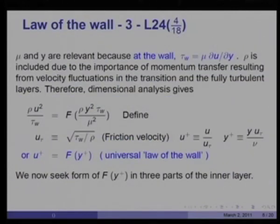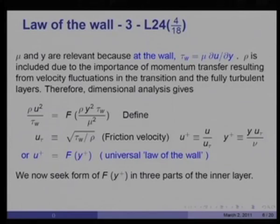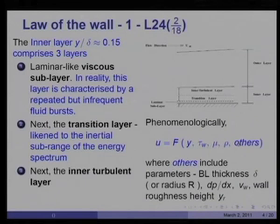We included viscosity and distance y because tau wall equals mu·du/dy. The density rho is included due to the importance of momentum transfer resulting from velocity fluctuations in the transitional and fully turbulent layers. There are bursts of fluid that break down the laminar sublayer, requiring momentum transfer from the outer layers to the inner layer. Therefore, density plays an important role. So we concentrate on these four parameters — rho, mu, y, and tau_wall — as they define more or less the equilibrium of the inner layer.